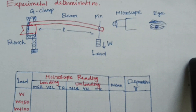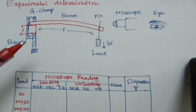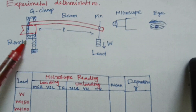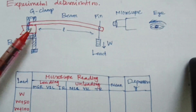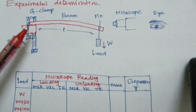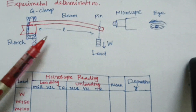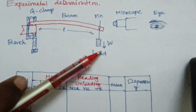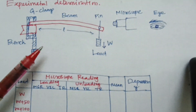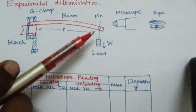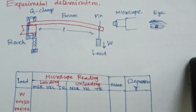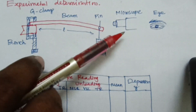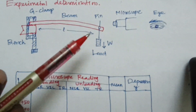Already we know what a cantilever is: the beam is fixed at one end and load is applied to the other end. Here the given beam is fixed rigidly at one end with the help of a G-clamp, and the load is suspended at the other end as W. A pin is fixed at the other end of the beam, and a travelling microscope is used to observe the pin.